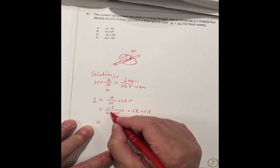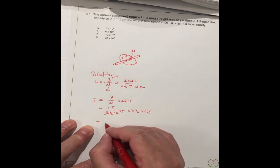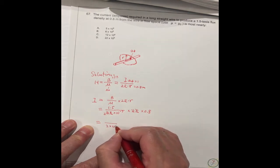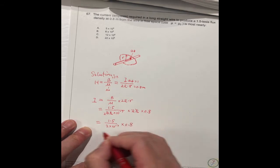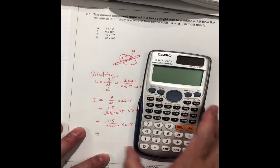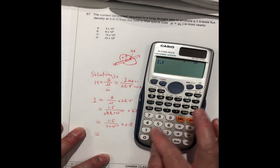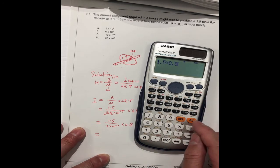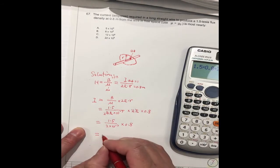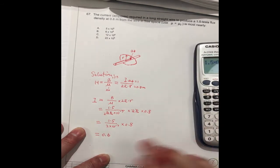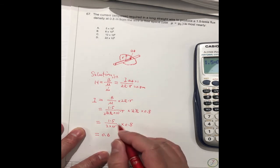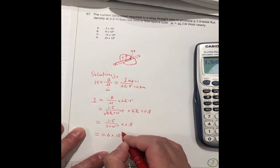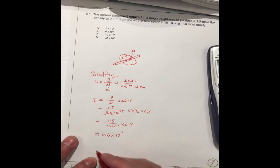So this is 2 times 10^-7, this is 1.5 times 0.8. So 1.5 times 0.8 divided by 2, it's 0.6. Because this is 10^-7, it should be reversed, it should be 10^7.